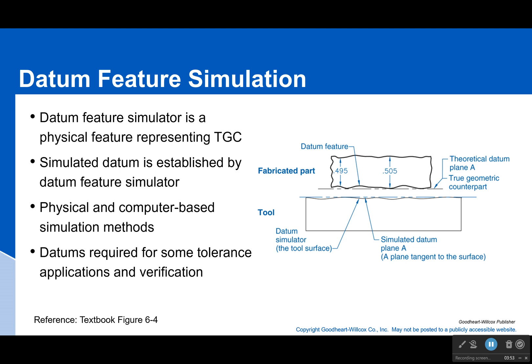We'll use instead a datum feature simulator. Now it's going to be something physical, so it's a tool or a tool surface that's going to simulate that perfect plane as best as it can, and it's going to then connect with that true geometric counterpart. So right here you see these phantom lines—that's just saying that that's that perfect plane right there that's touching all the top points of my bottom surface. I've also got a perfect plane right here which is touching all the top points of my tool surface, and we're going to connect those two together.